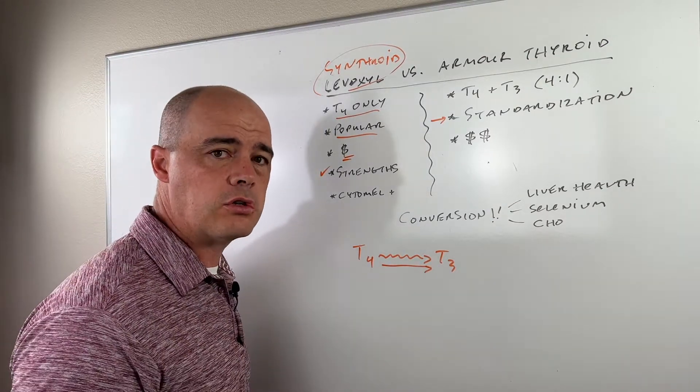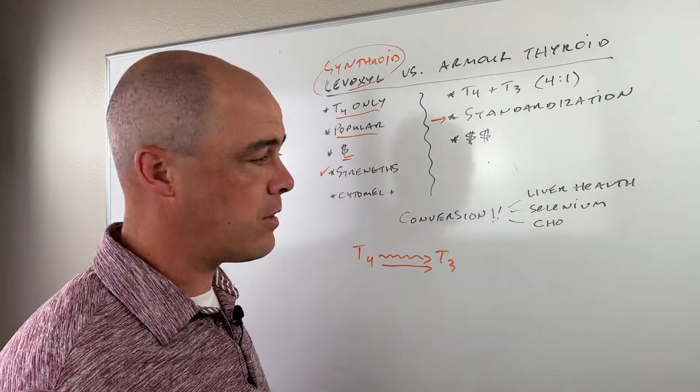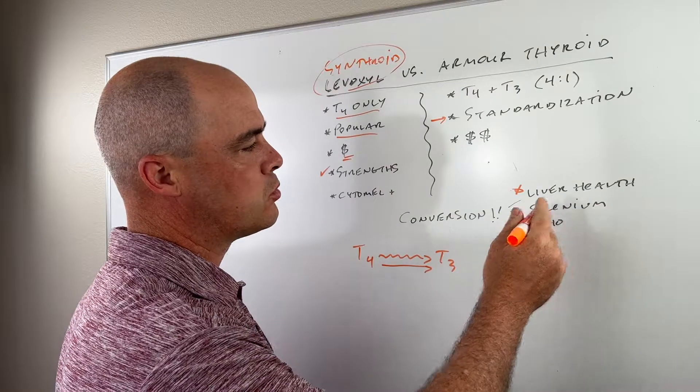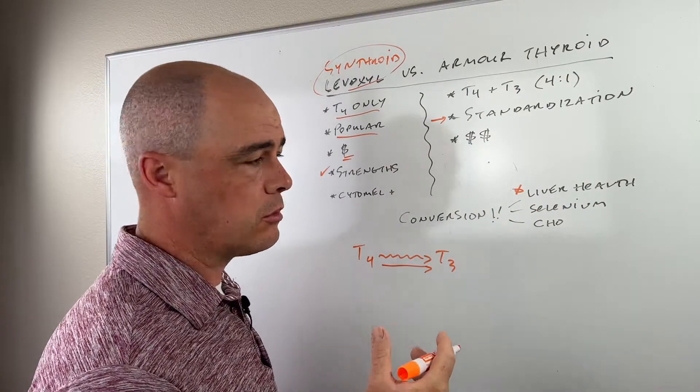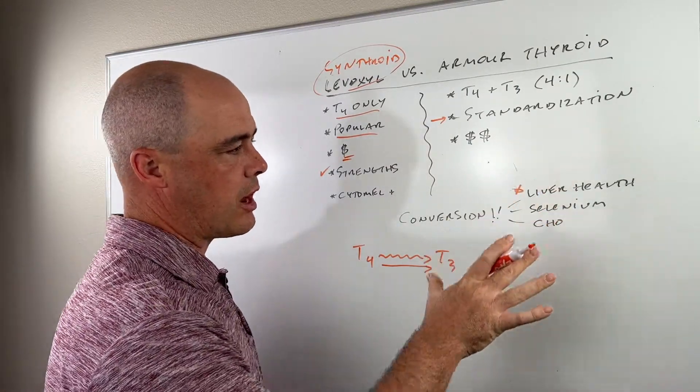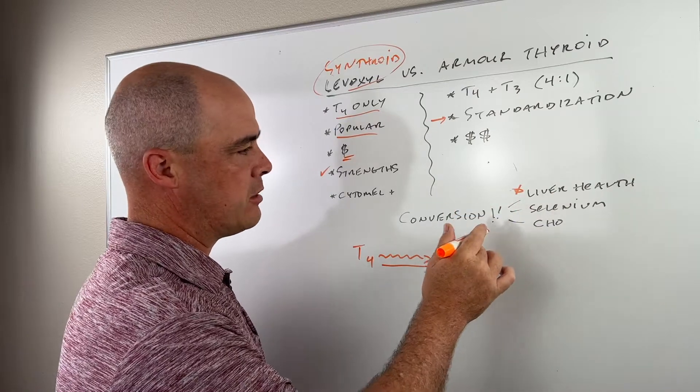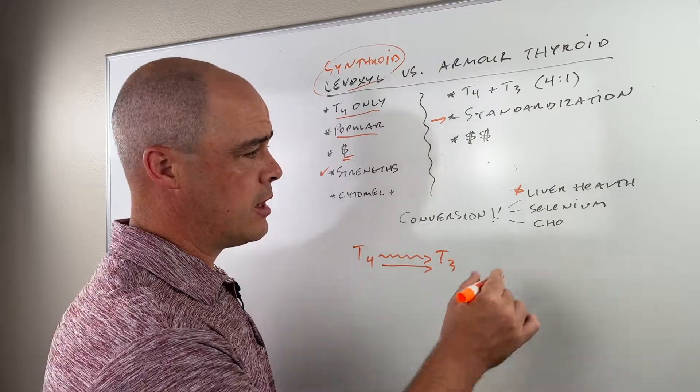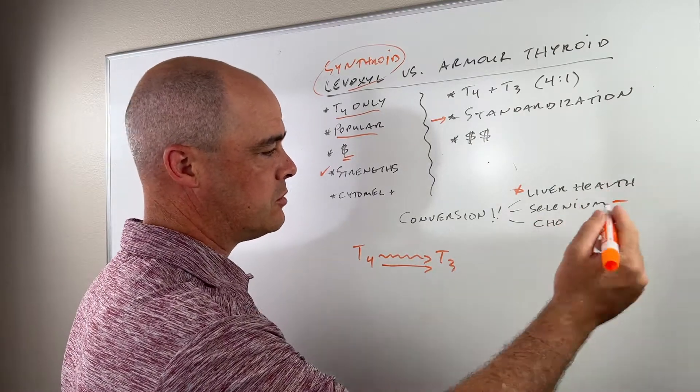So what causes you to convert T4 to T3? A lot of different factors. A big one is your liver and kidney health. Most of the conversion is going to occur in your liver. Most of the thyroid issues happen in the liver. So if you have any sort of liver issues, you're likely going to have issues converting. Selenium, zinc. A big one is carbohydrates.